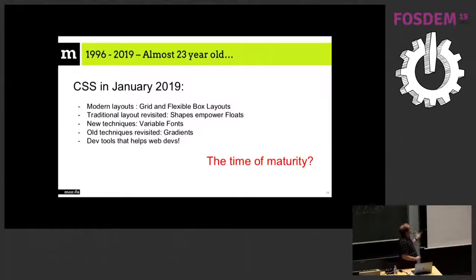So I'm almost at the end. It's 23 years now that CSS has been invented. Modern layout has appeared. Grid and flexible box are layouts that should have been there in the nineties but weren't for a lot of reasons. The first one was that browser and computer were probably not powerful enough to have this implemented in a generic way in a browser. Traditional layouts are still here, now revisited with shapes for floats. Classical way of doing CSS leads to new effects. We have new techniques like variable fonts and old techniques revisited like gradients. All these now have a set of dev tools that can help the developer debugging them and make them really work in the browser.